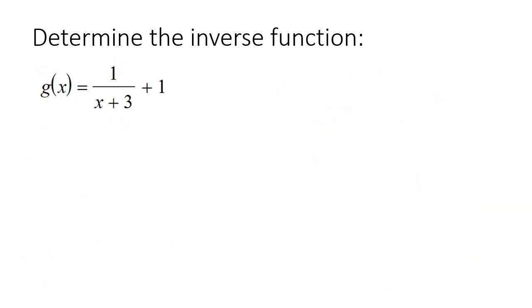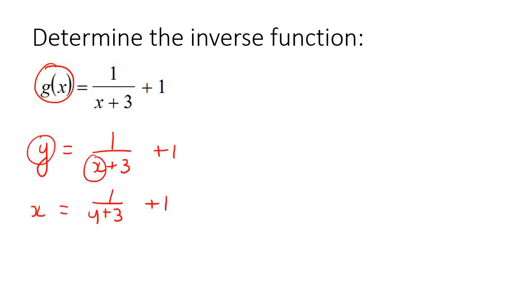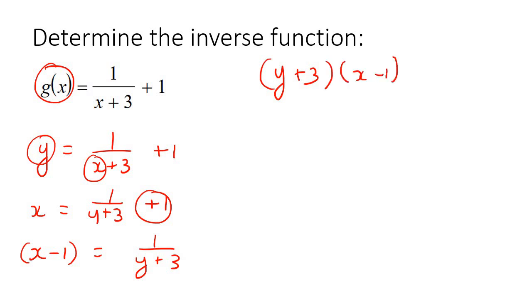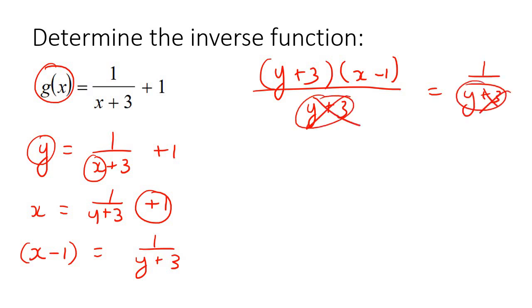Here is our last example. First step, just replace this with a y. Next step, replace these two letters around. Now take this one to the left. Now what we can do is get a common denominator — the common denominator would be y plus 3. I'm going to multiply this one with y plus 3 and this one with y plus 3. To make it a little bit easier, I'm going to multiply both of them at the same time with y plus 3. Now that the denominators are the same, we can cancel those parts out.